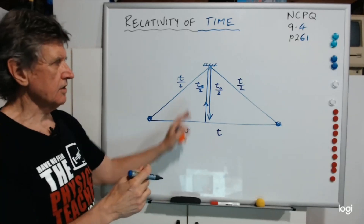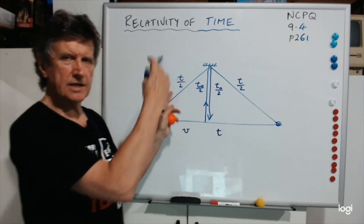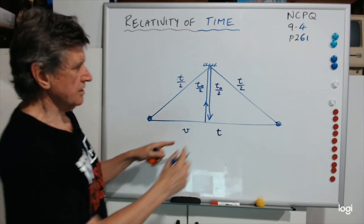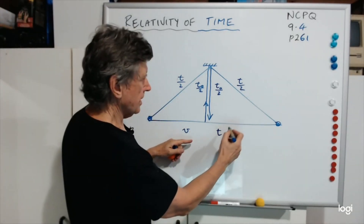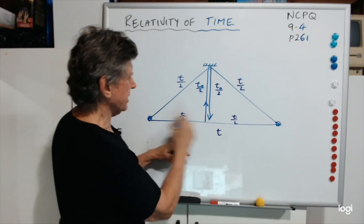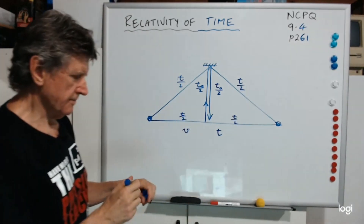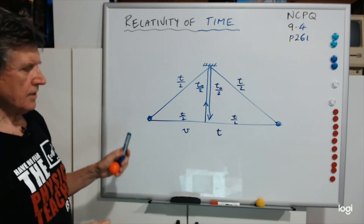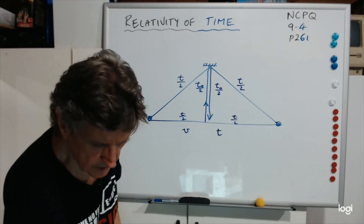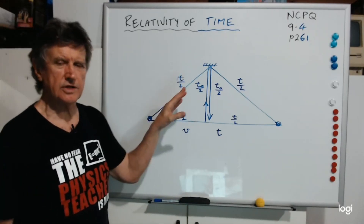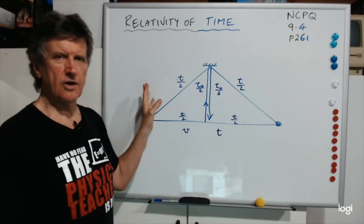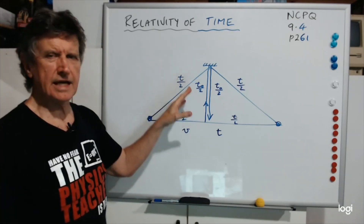It'll be T0 if it's at rest with respect to the event. Now we've got these triangles — this triangle here would be T/2 and T/2. Now what we're going to do is look at these two triangles, the three sides, and work out the distances so we can apply Pythagoras' theorem to get some sort of relationship.